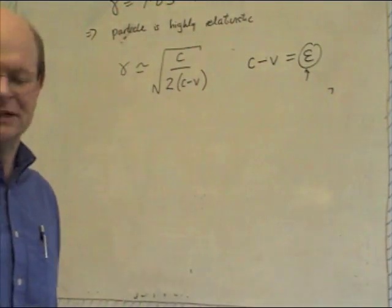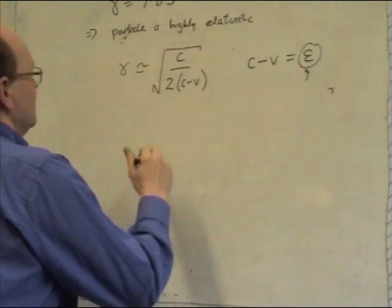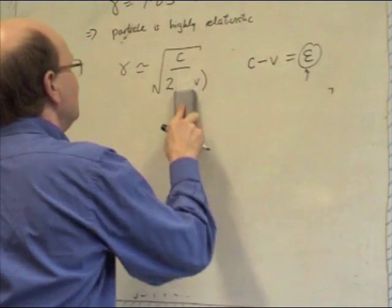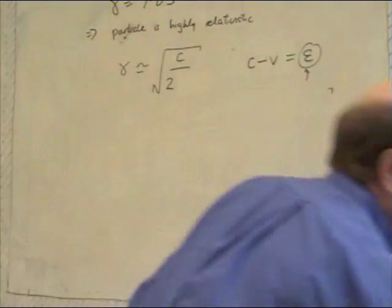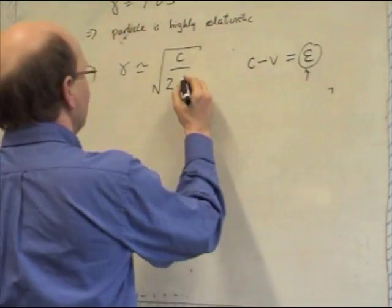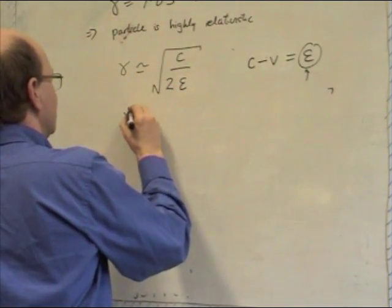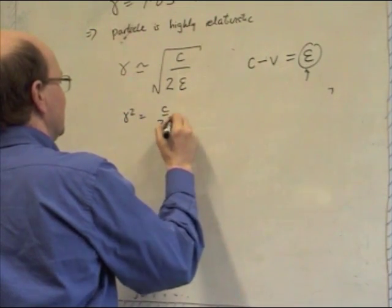for now, just accept that it's true and redefine c minus v to be equal to epsilon. And this is the thing we're trying to calculate. It's the difference between the particle speed v and the speed of light. So we're going to write gamma is approximately the square root of c upon 2 epsilon, right?